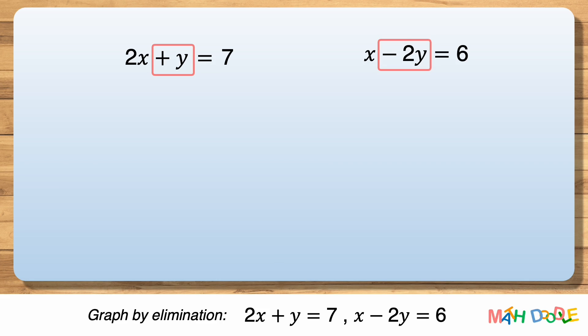To do this, the y's in the equations must have the same but opposite coefficient. So, let's multiply the first equation by 2. Then, let's write the two equations vertically.